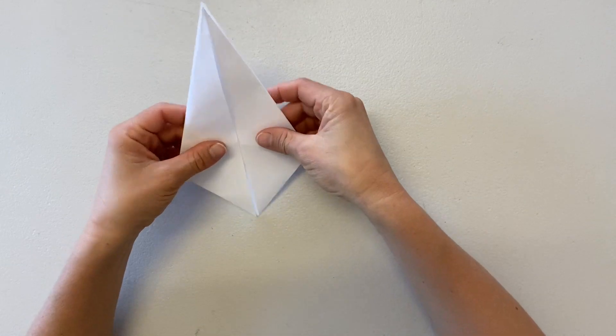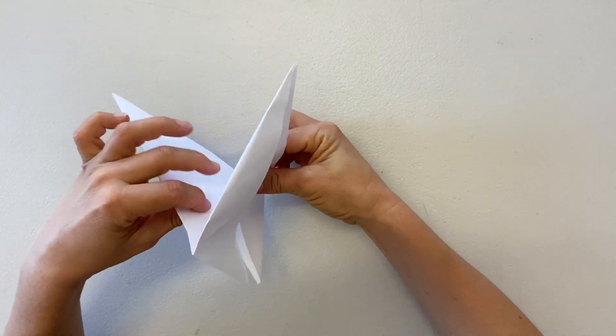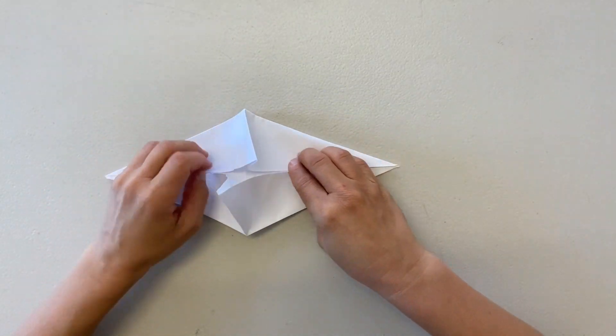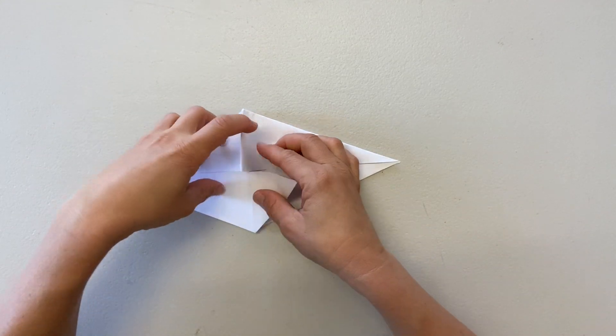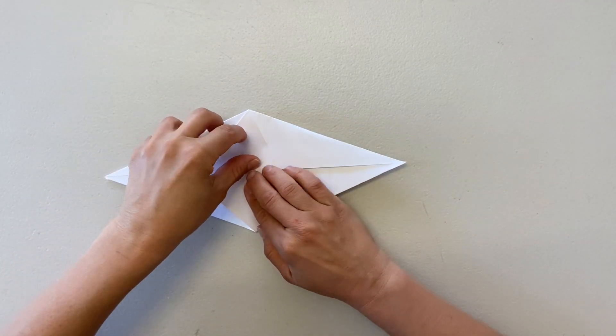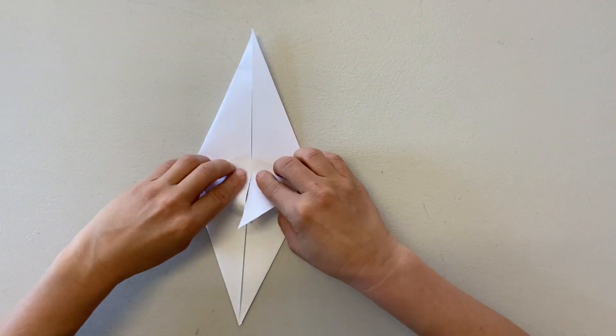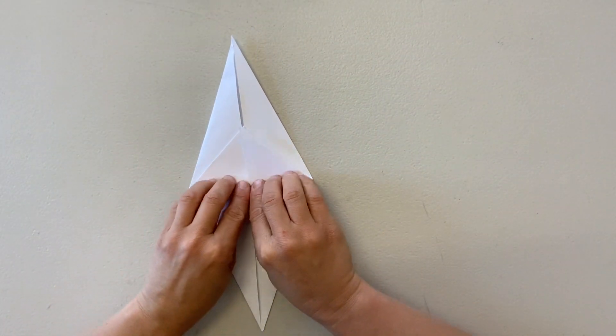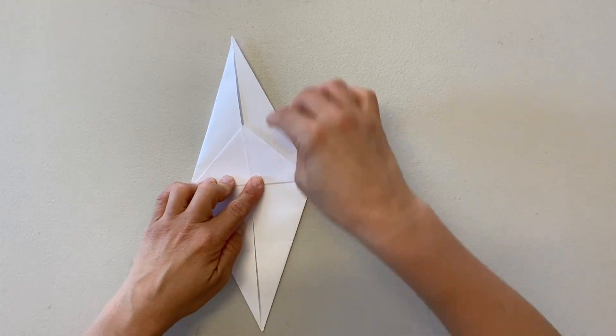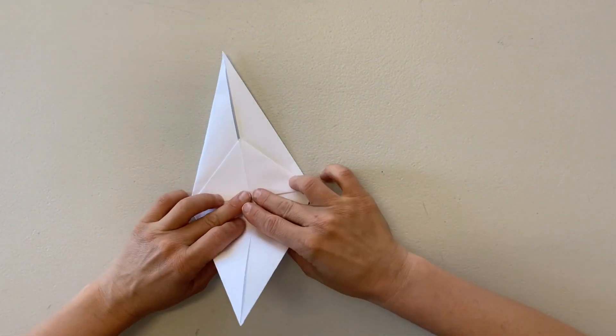Unfold your top points and lay flat. There'll be two little sticky-uppy bits. These will become the crow's wings. Fold these flat one way, and then fold them back the other way. Now fold the whole thing in half.